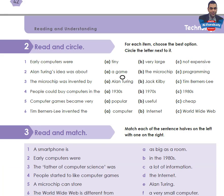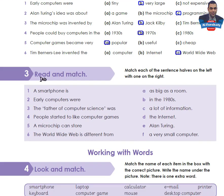Let's check the answers. One: early computers were very large. Two: Alan Turing's idea was about programming, because his idea was to program a computer so that it could do lots of different things, and he is called the father of computer science. Three: the microchip was invented by Jack Kilby. Four: people could buy computers in the 1970s. Five: computer games became very popular. Six: Tim Berners-Lee invented the World Wide Web.